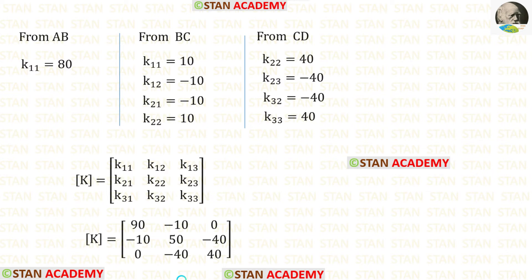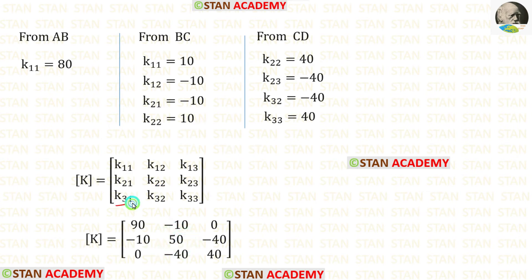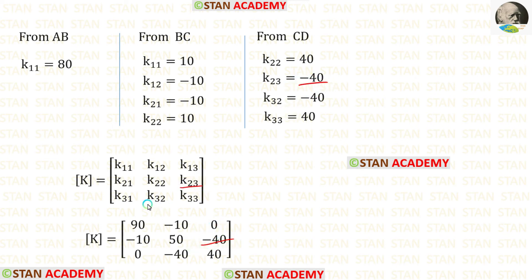We have found the stiffness matrix elements from bars AB, BC, and CD. Now let us assemble the global stiffness matrix. For K11, we got two values: 80 + 10 = 90. For K22, we got two values: 10 + 40 = 50. For K13 and K31, there is no value, so we enter 0. The remaining values are: K12 = −10, K21 = −10, K23 = −40, K32 = −40, and K33 = 40.